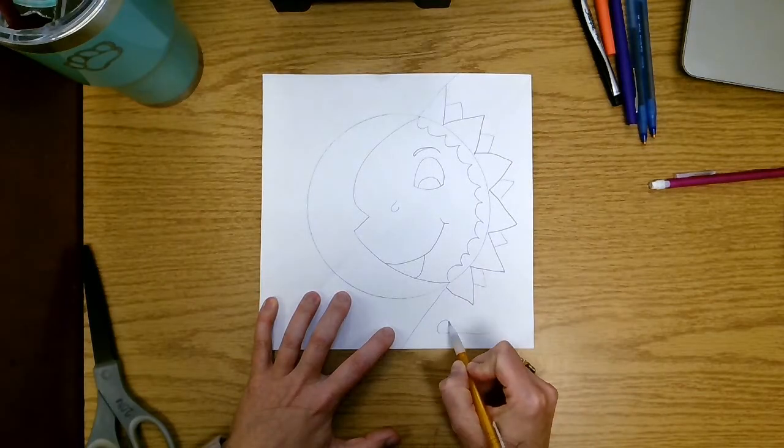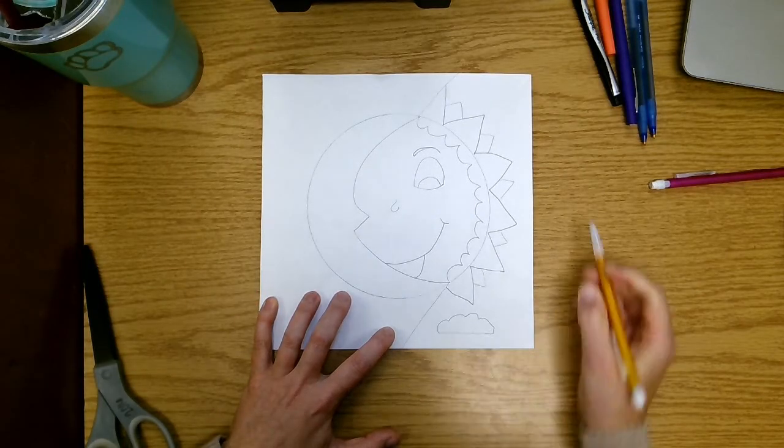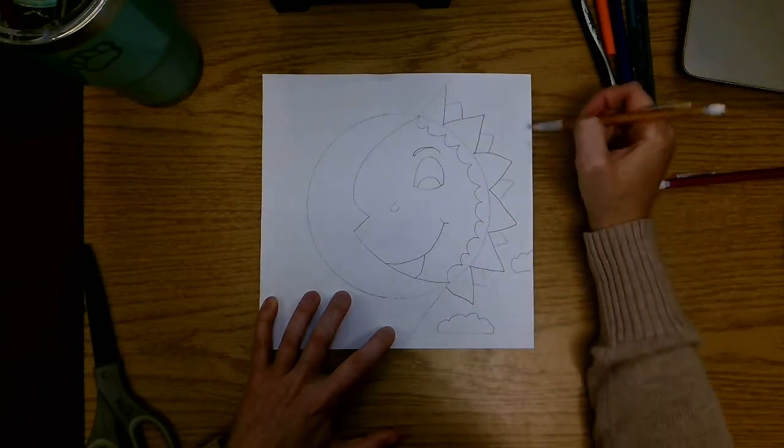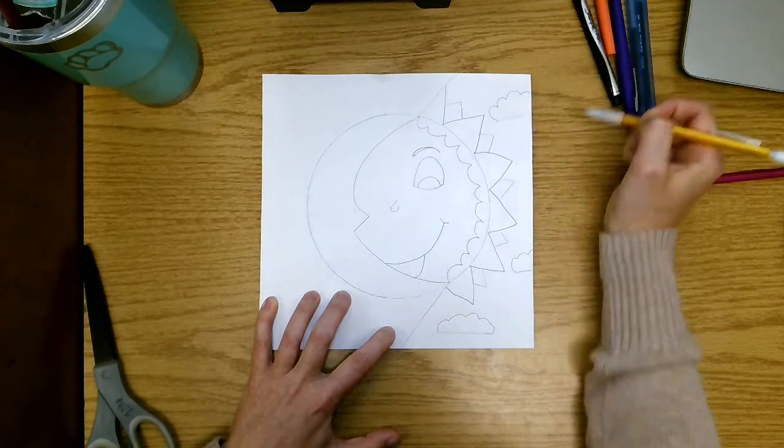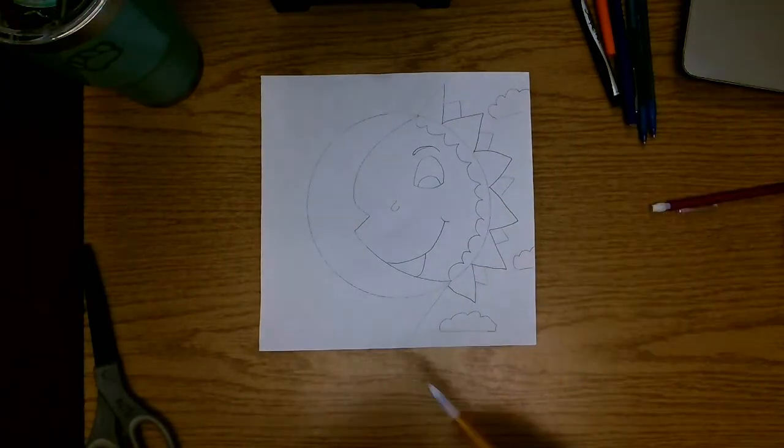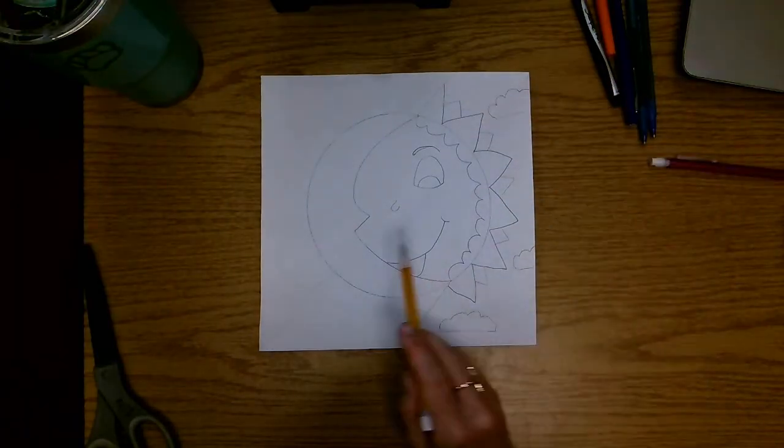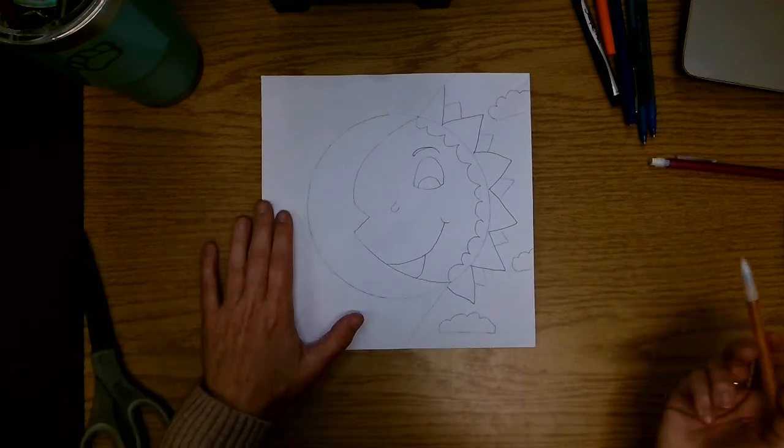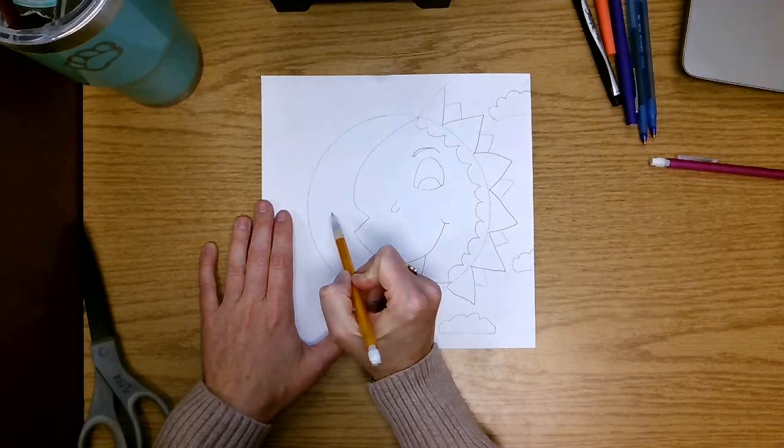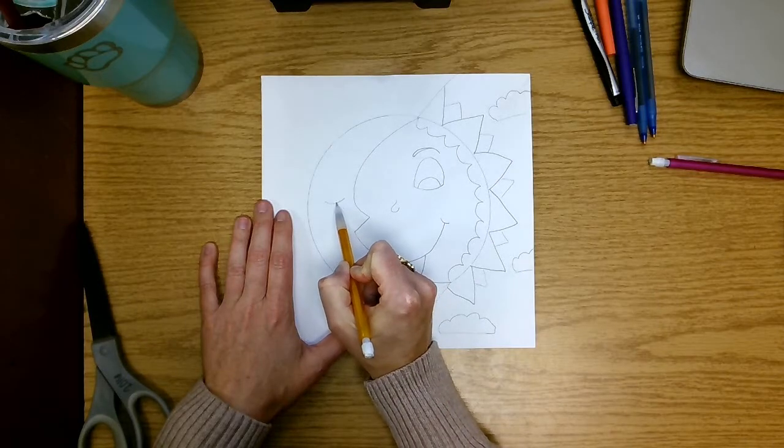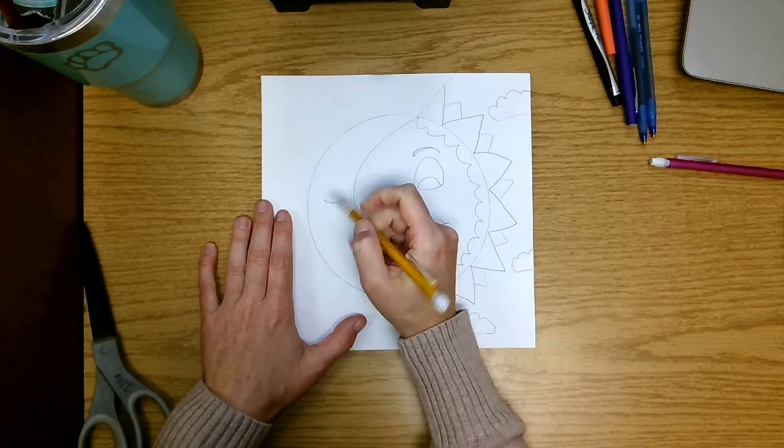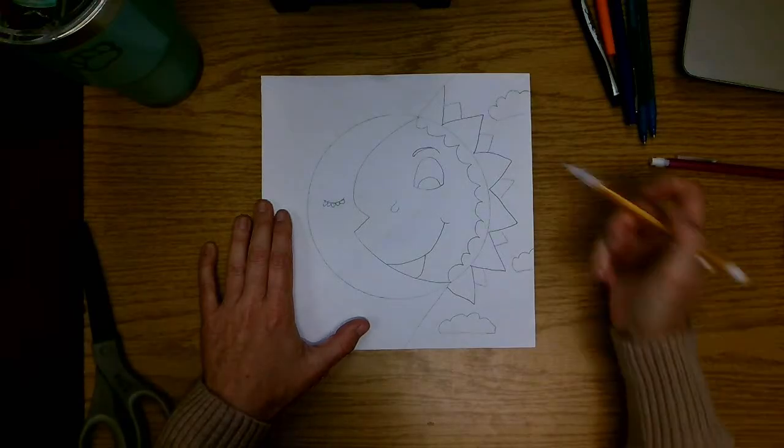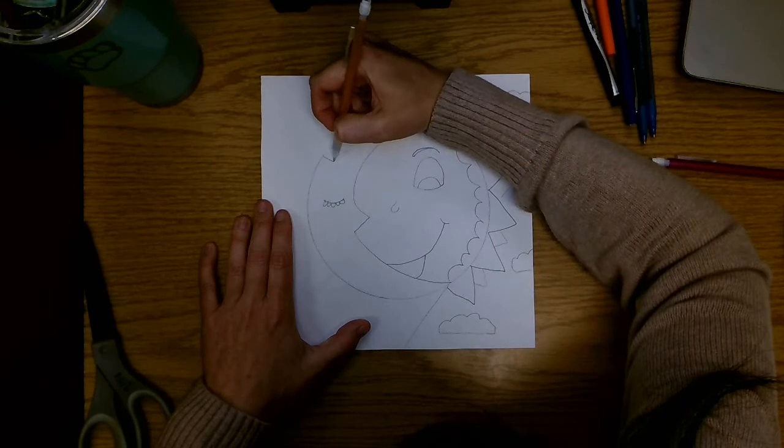And now that I have my sun decorated, now I'm going to go ahead and do my moon. For the moon, I'm going to make him sleepy, so I'm going to make his eye closed. Put some eyelashes there. I'm going to give him a sleep cap.